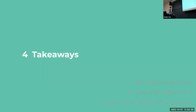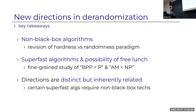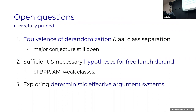Zooming out: we have a non-black-box version of hardness versus randomness—a revision of the classical framework with many instantiations and new constructions of targeted PRGs. The new way of thinking in the last couple of years avoids classical PRGs entirely and goes in a targeted direction. We have questions about super-fast derandomization and free-lunch theorems—removing randomness without paying—and several results indicating this may be true. The two directions are distinct but related: when you want free-lunch theorems, you need non-black-box techniques.